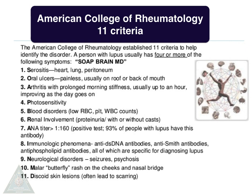B for blood disorders. R for renal involvement, in which you will see proteinuria with or without casts. A for ANA titer, which should be more than 1:160. I for immunologic phenomena such as anti-double-stranded DNA antibodies, anti-Smith antibodies, and anti-phospholipid antibodies, all of which are specific for diagnosing lupus.